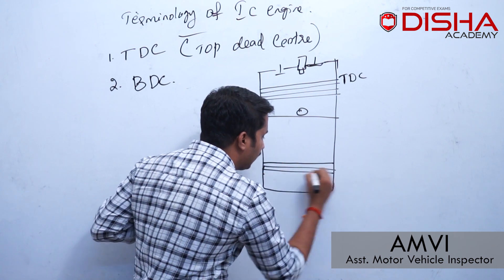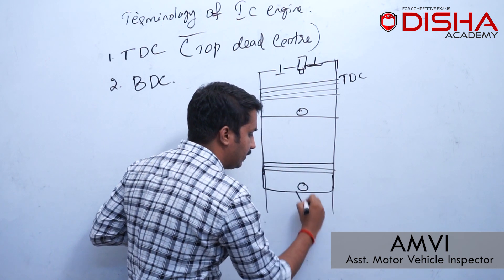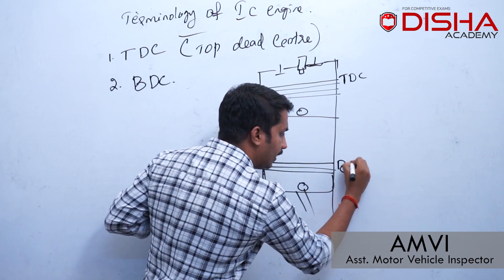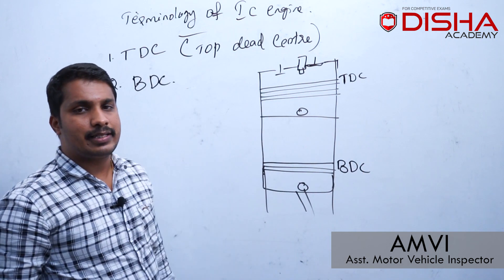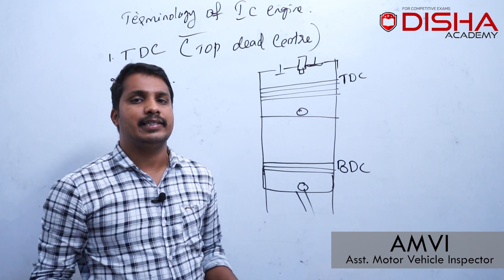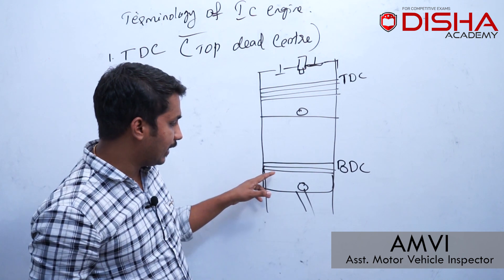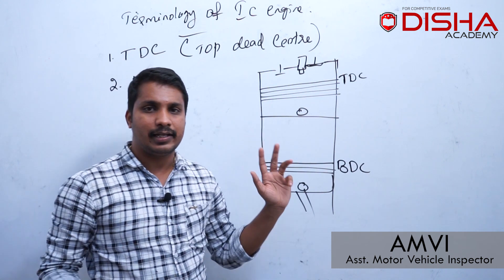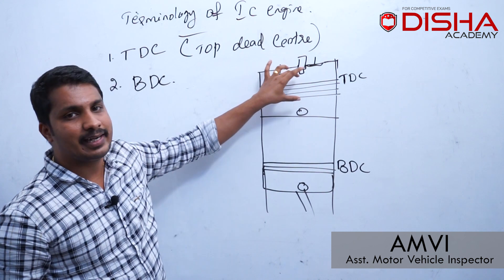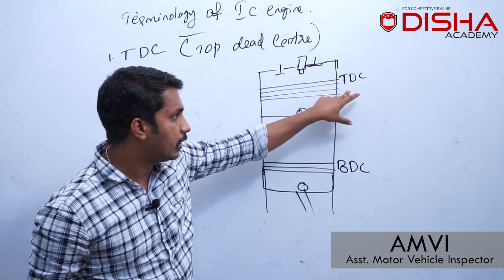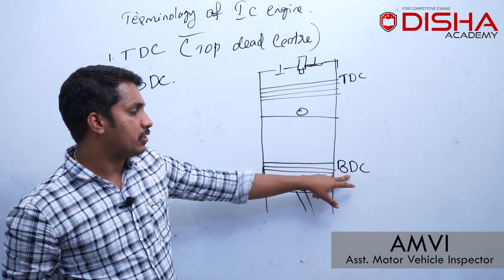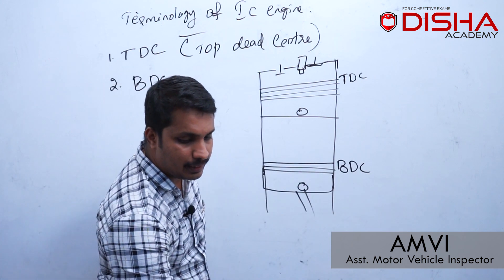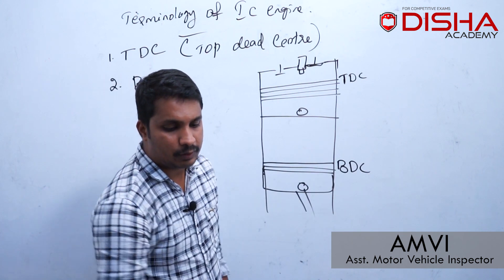The bottommost position of the piston in the engine cylinder is called BDC — Bottom Dead Center. So, TDC is the topmost position of the piston in the engine cylinder, and BDC is the bottommost position. The next topic is stroke.